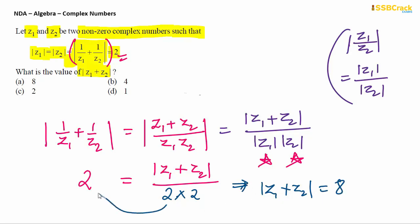So it's clear that modulus of z1 plus z2 is just the value 8. 2 into 2 into 2 equals 8. Hence the answer is option A.